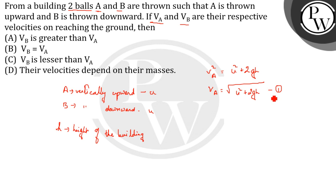For VB, using the same formula: VB² = u² + 2gh, so VB = √(u² + 2gh).